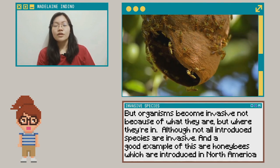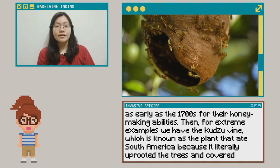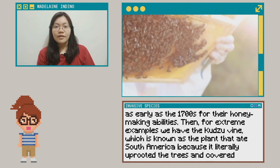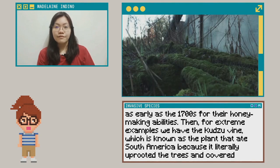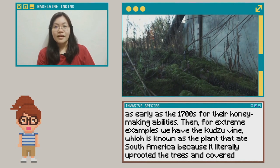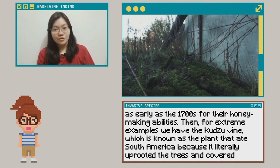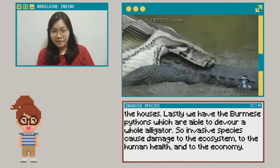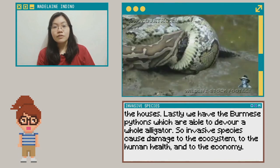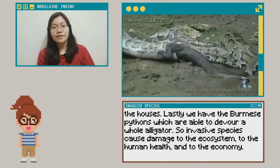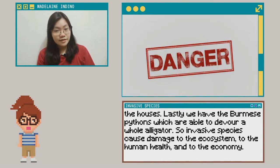— a good example are the honeybees, which were introduced in North America as early as the 1700s for their honey-making abilities. For more extreme examples, we have the kudzu vine, known as the plant that ate the Southeast America because it literally uprooted trees and covered houses. Lastly, we have the Burmese pythons, which are able to devour a whole alligator. Invasive species cause damage to the ecosystem, to human health, and to the economy.